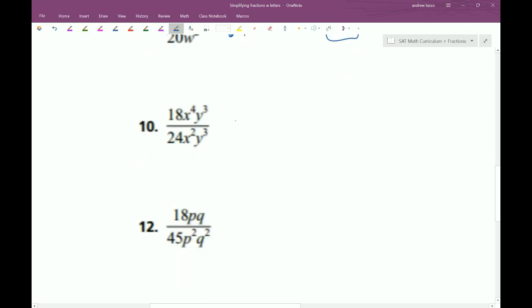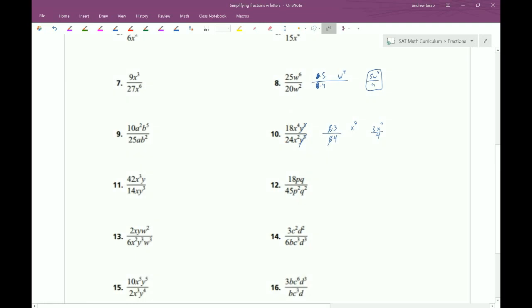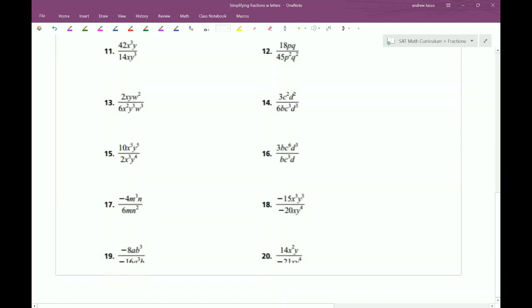Same thing here. 18 becomes 6 times 3. 24 is 6 times 4. The x's, we can subtract 4 from 2 and get 2. The y's can cancel out fully. The 6s cancel out. You end up with 3x squared over 4. So I think you guys start getting the picture here as to what happens.